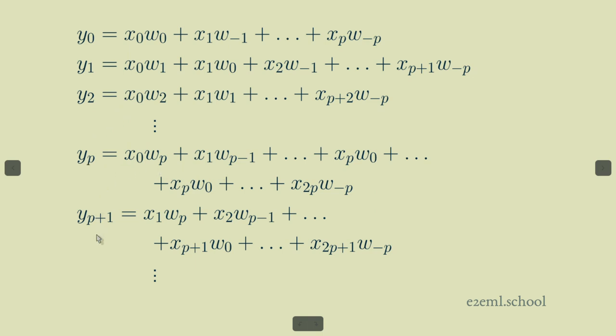And then we keep going. We just increment our x index by one every time we increment our y index by one, and run that sliding dot product step by step all the way across.